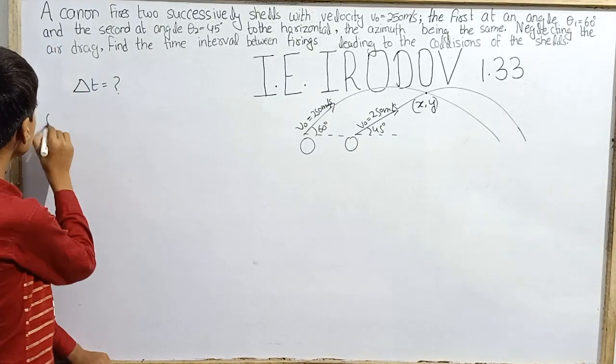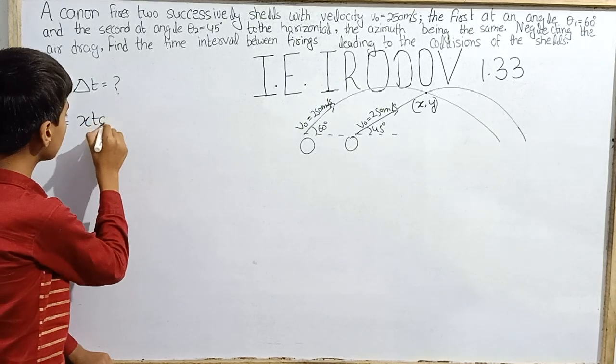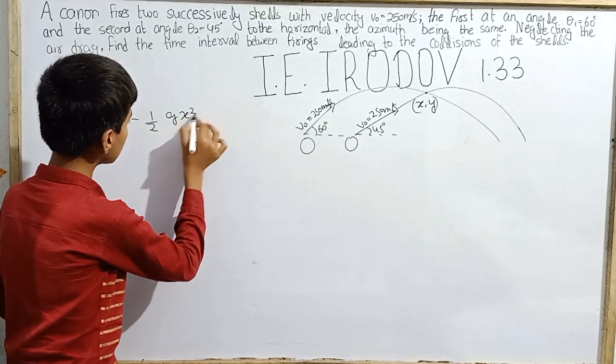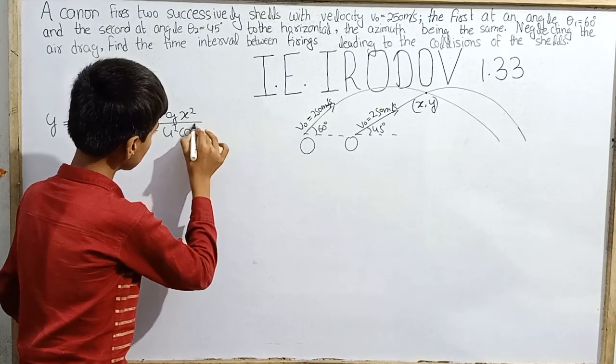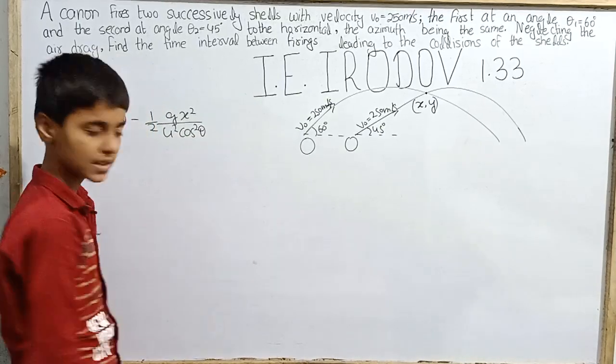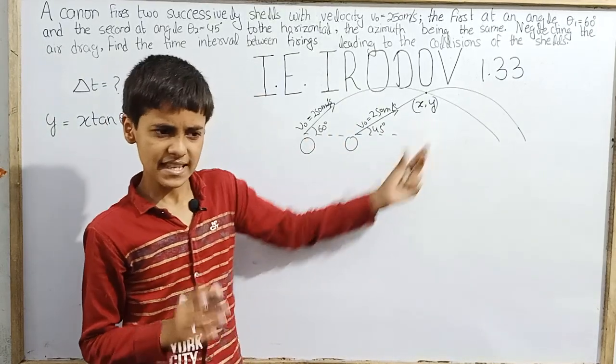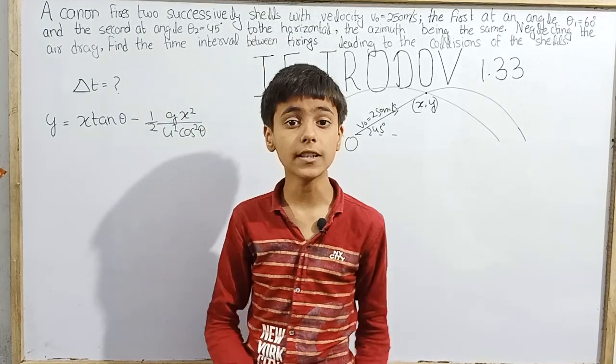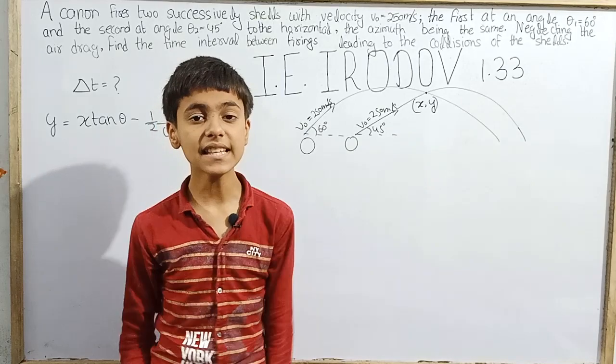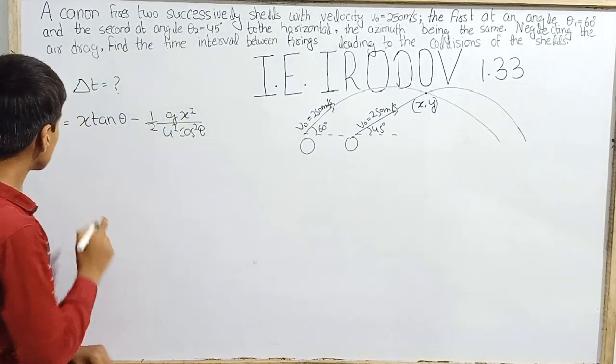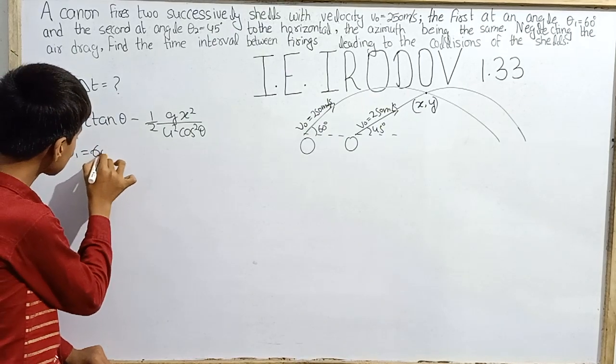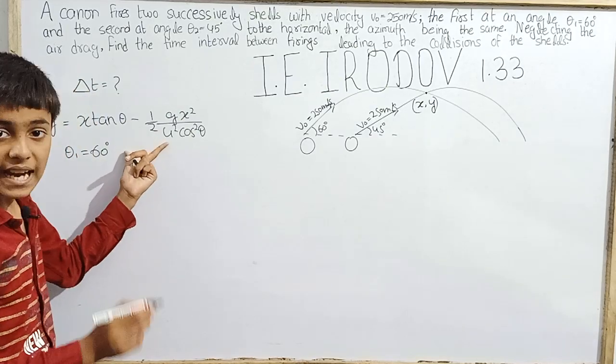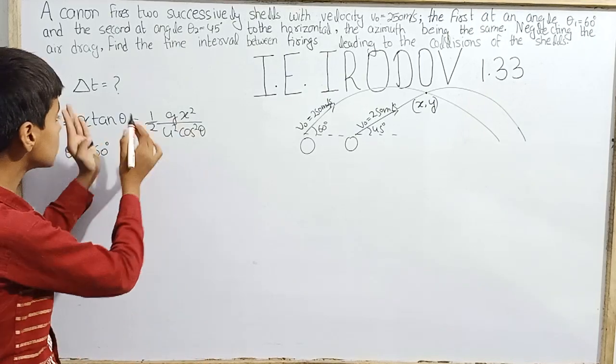So we can use the equation of trajectory: y equals x tan θ minus half g x squared over u squared cosine squared θ. Since at the collision of shells, they will have the same position, horizontal and vertical. That means these values will be the same for both. So first I will write for θ₁, 60 degrees, and then for θ₂ which is 45 degrees, and then we equate them.